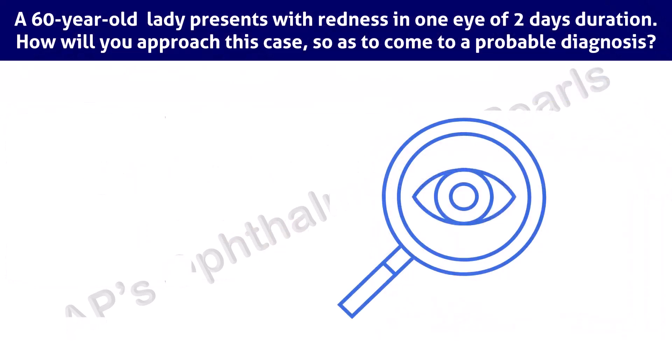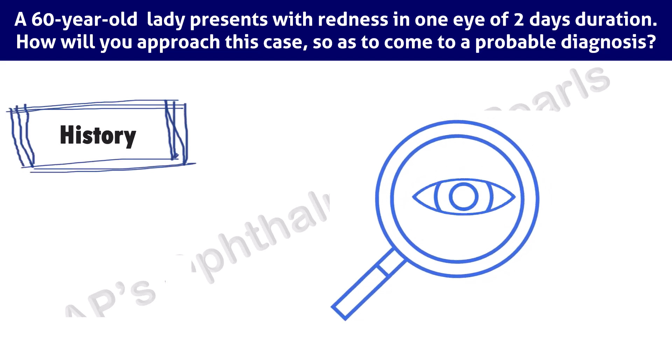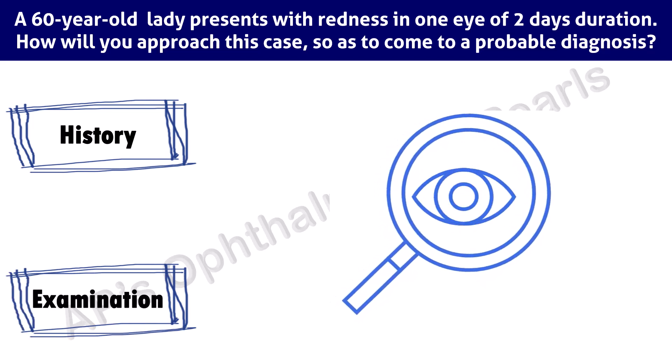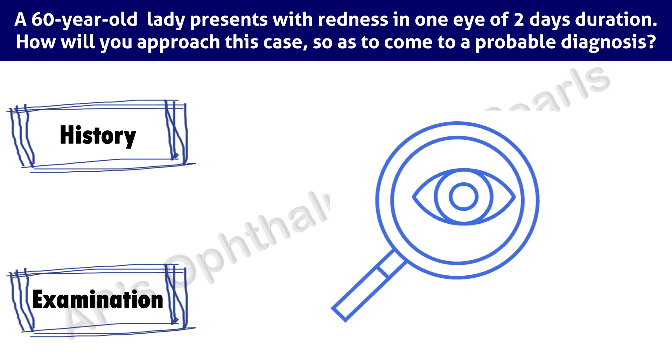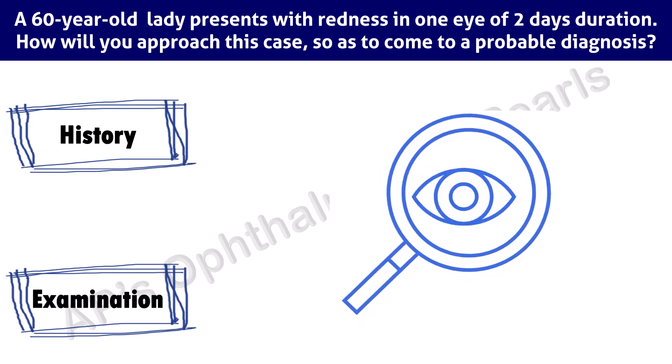A 60-year-old lady presents with redness in one eye of two days duration. How will you approach this case so as to come to a probable diagnosis? The approach to a case of red eye involves a thorough history and complete ocular examination in order to come to a precise diagnosis. However, some clues may be found in the history and individual findings which help narrow down the choices.